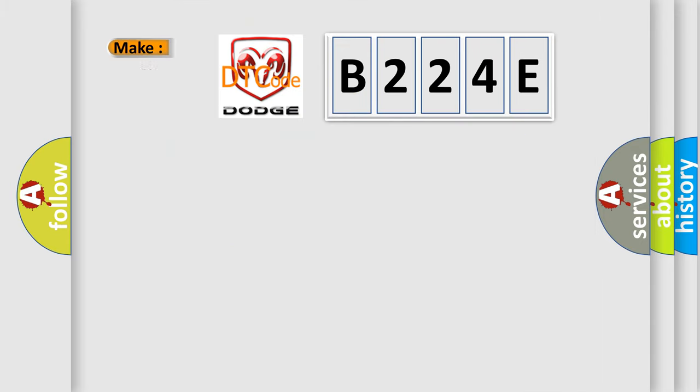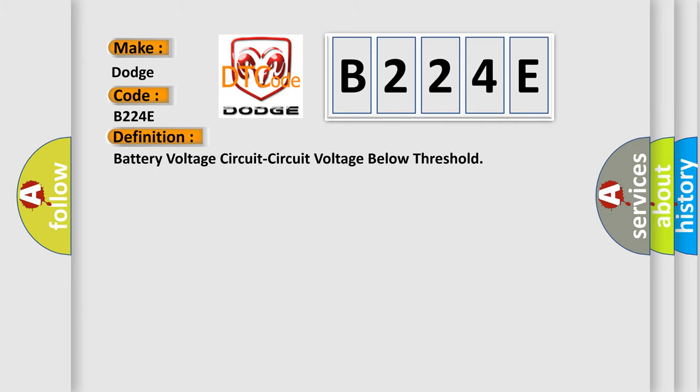So, what does the diagnostic trouble code B224E interpret specifically for Dodge car manufacturers? The basic definition is battery voltage circuit voltage below threshold.